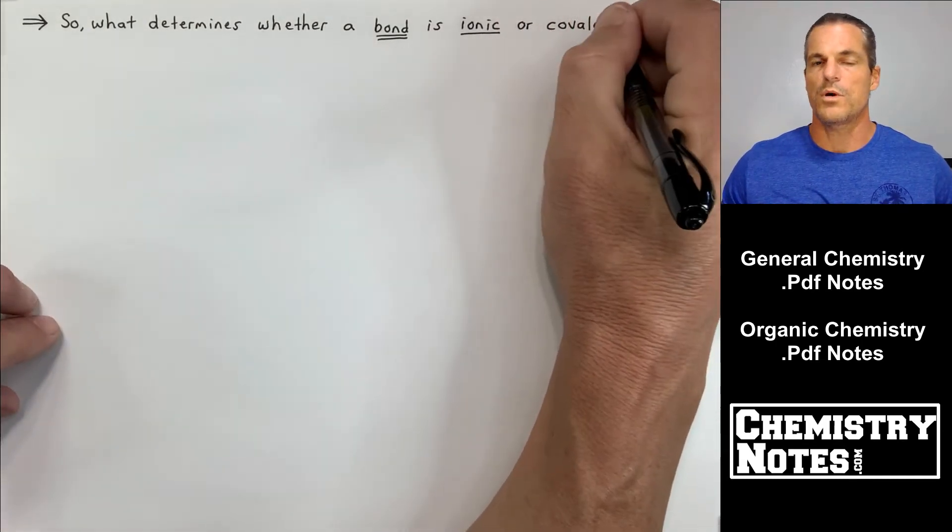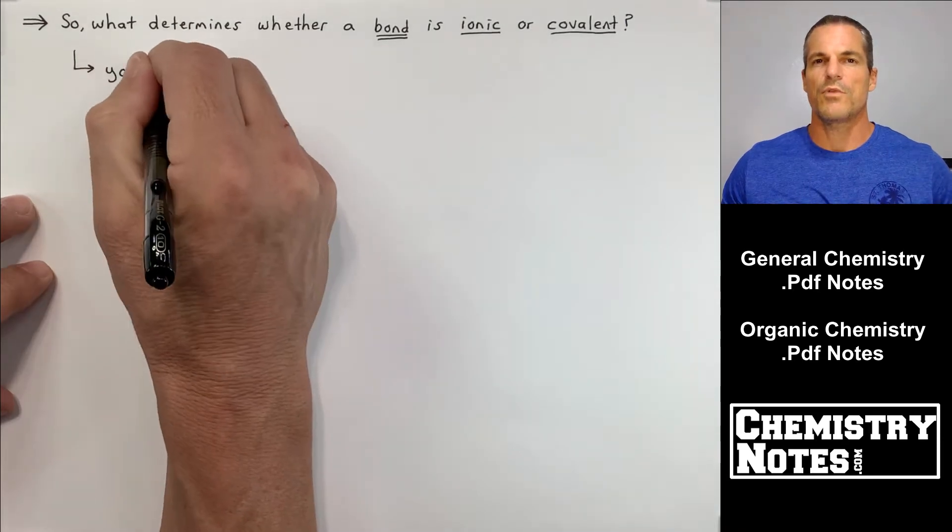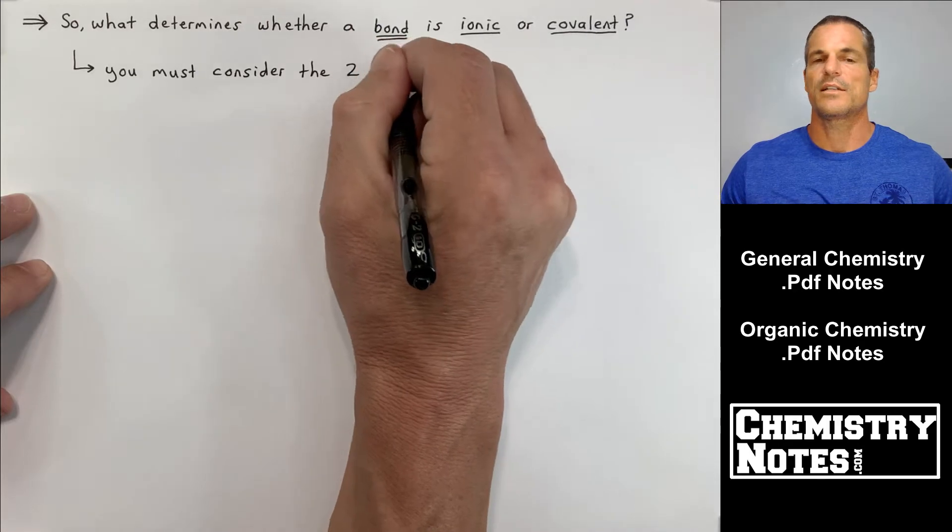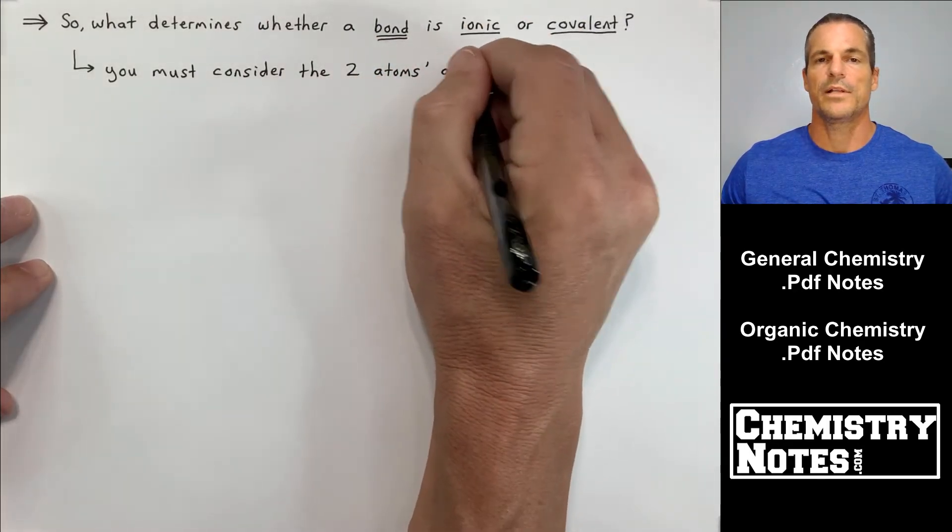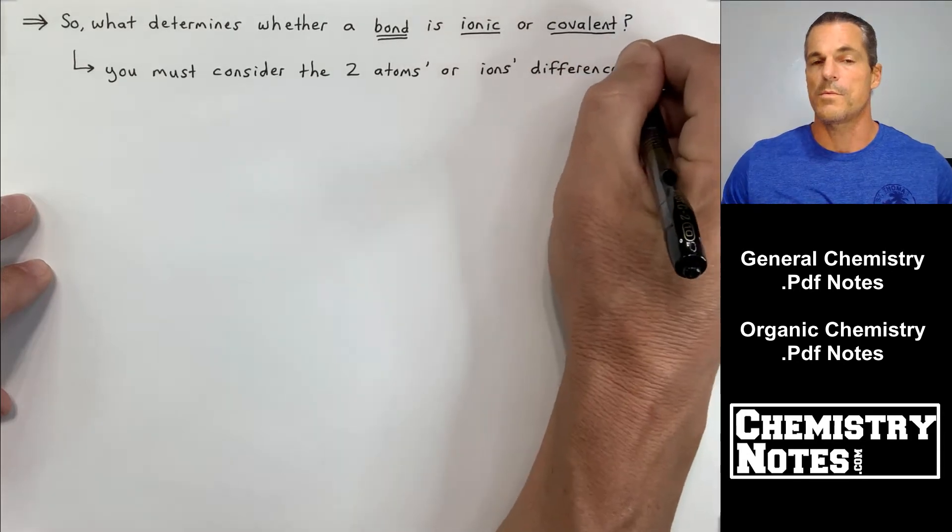We're at the top here of page 1 of today's notes and we're just getting ready now to talk about ionic versus covalent bonds and things like dipole moment and polarity of bonds and an overall polarity of molecules or formula units.